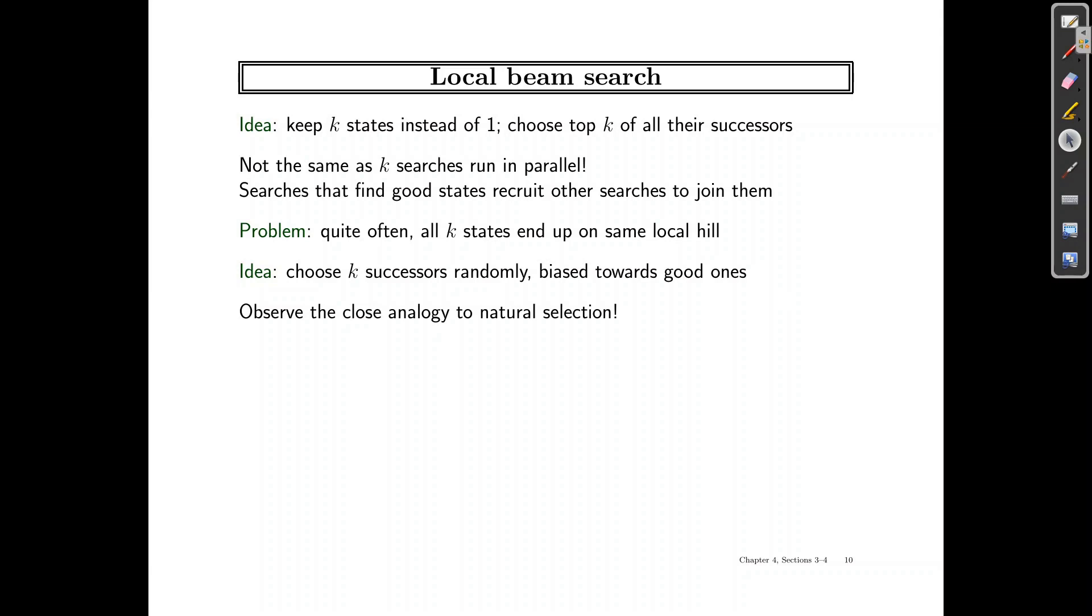Now, one of the problems with this search is that it does not have a diversity of states. So quickly it can become concentrated on a small region of the state space. So in that case, it will become similar to stochastic hill climbing.